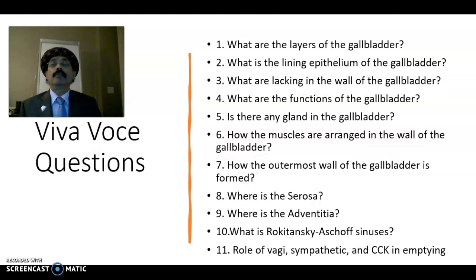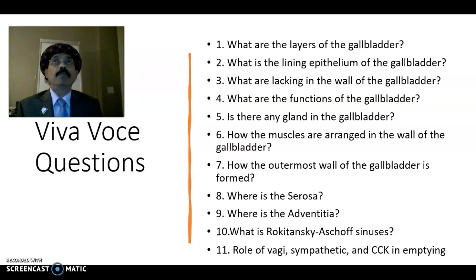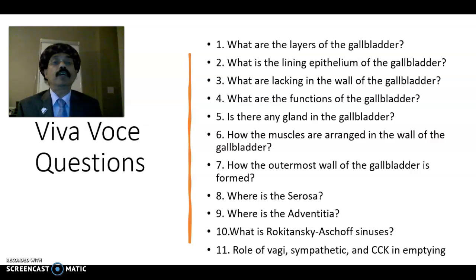Review questions: What are the layers of the gallbladder? The gallbladder has tall columnar epithelium, lamina propria, muscularis externa, and either adventitia or serosa. How are the muscles arranged? They are randomly arranged with intervening collagen and elastic fibers.